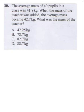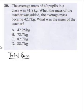The average mass of pupils in a class was 41.8 kg. When the mass of the teacher was added, the average mass became 42.7 kg. What was the mass of the teacher? This is an average question. The total sum of the individuals divided by 40 gives an average of 41.8.